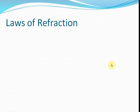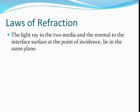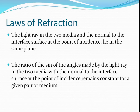There are two main laws of refraction. Refraction is the bending, or the change in the path of the light ray when it encounters a different medium. The first law states that the light ray in the two media and the normal to the interface surface at the point of incidence lie in the same plane. The second law states that the ratio of the sine of the angles made by the light ray in the two media with the normal remains constant for a given pair of media. All these heavy words seem pretty confusing — let's understand using pictures and animations.